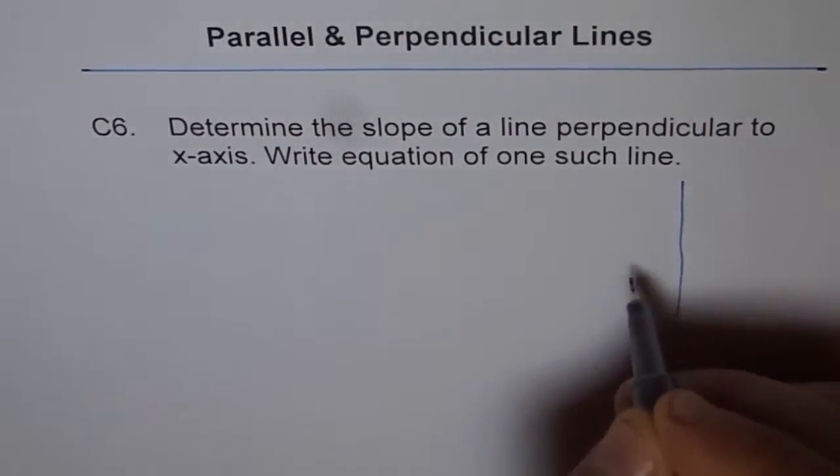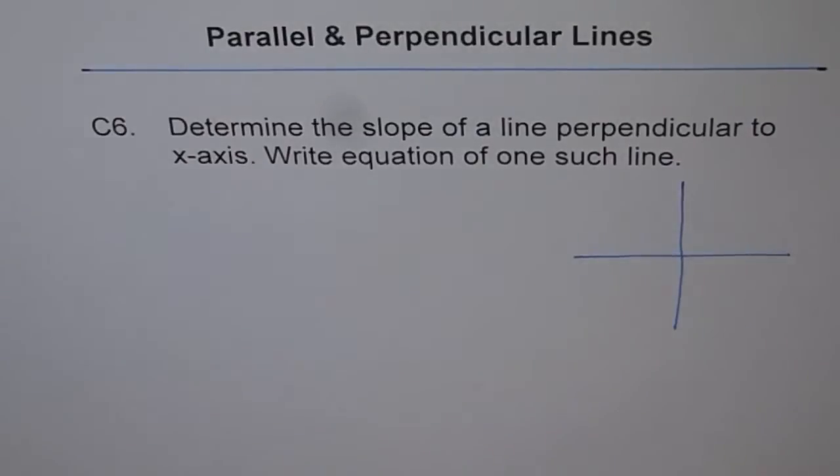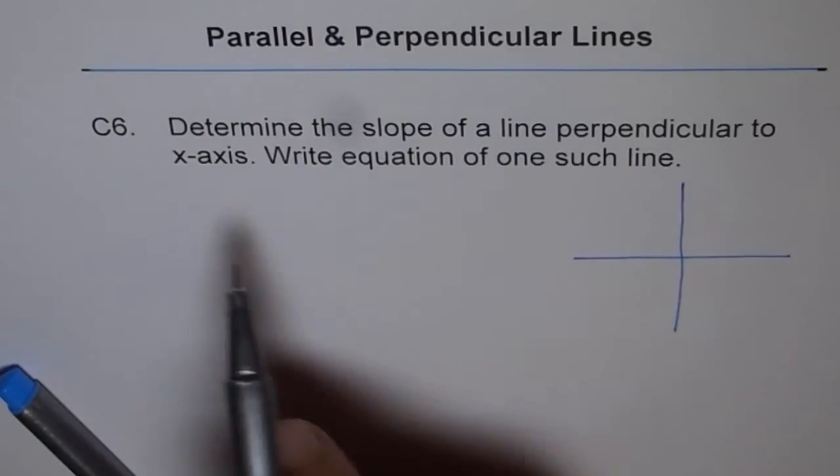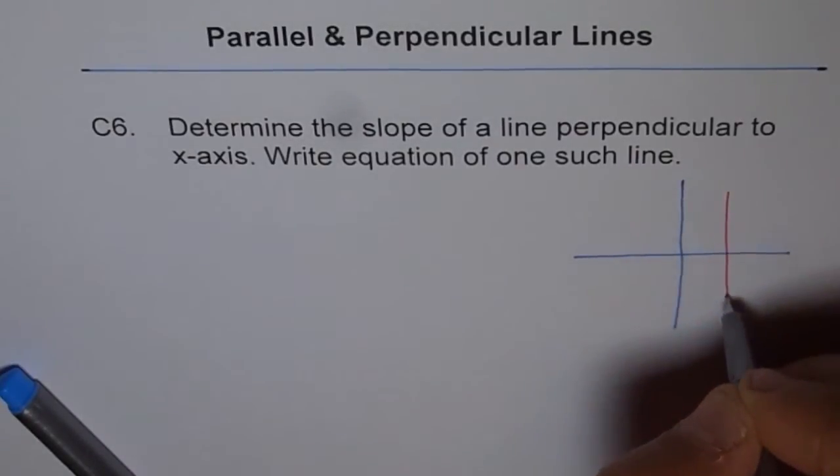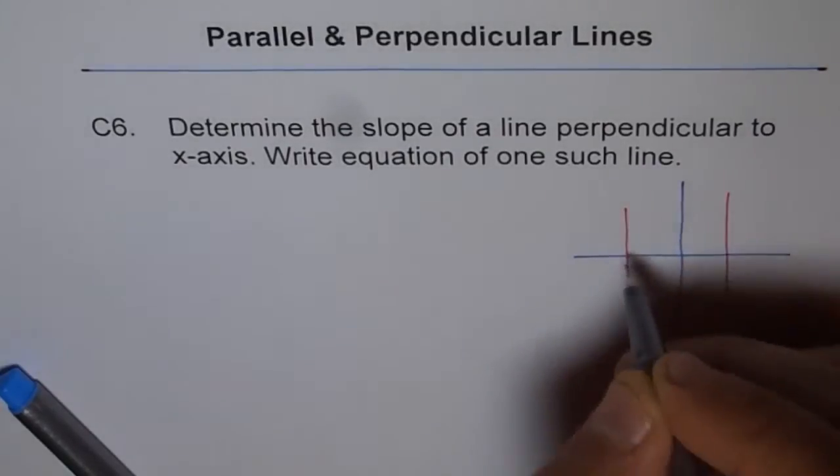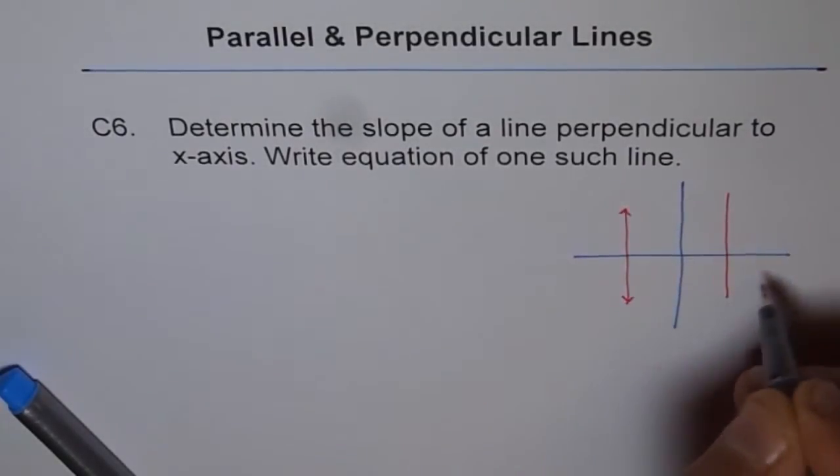Okay, let's think about it. That is our axis. And perpendicular to a line, perpendicular line to x-axis. So this is x-axis, right? Perpendicular means any line which is vertical.